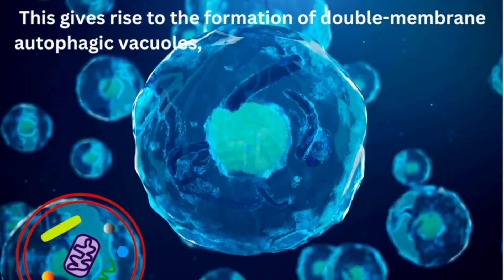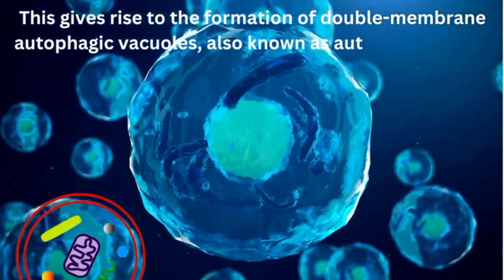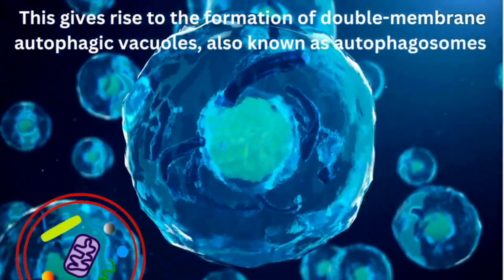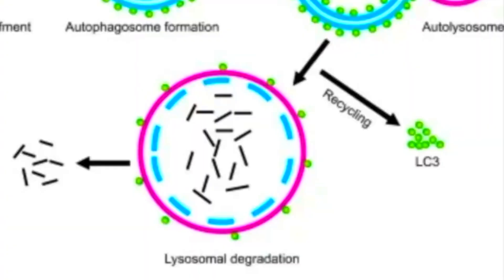Autophagosomes carry the junk cell pieces to a part of the cell called a lysosome. A lysosome's job is to digest or break down other cell parts.